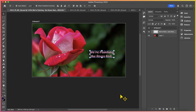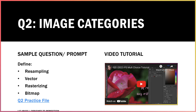So when you're asked to identify these different categories — resampling versus vectorizing, rasterizing, and so forth — keep in mind what I just demonstrated. Resampling means you're changing the amount of pixels. A vector is a file that does not deal with pixels. Rasterizing means that you're going to convert a vector file into a pixel-based image. And bitmap is just another way of saying that the image has pixels.